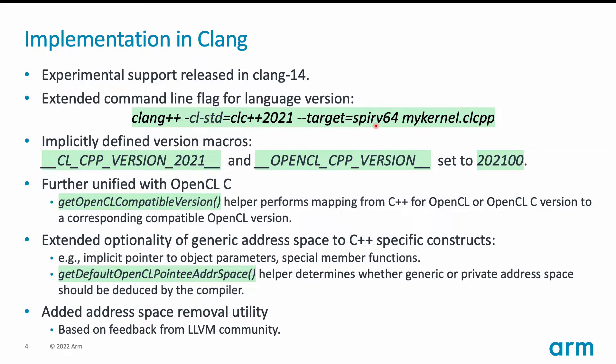In this example, we are compiling down to SPIR-V binary. A couple of changes were made to version macros — for example, we added the new macro CLCPP version 2021, and we also modified the value of OpenCL CPP version to 2021.00. We further unified more of the C++ support with the OpenCL C implementation by adding a helper that maps the C++ kernel dialect and C kernel dialect into corresponding compatible OpenCL versions.